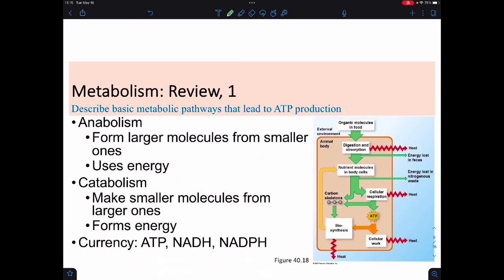Just to refresh our brains, metabolism is all the chemistry you can perform. Anabolism is when we make larger molecules from smaller ones, and this is an energy-consuming process. Catabolism is when we make smaller molecules from larger ones, and this typically is an energy-forming process, although that doesn't necessarily need to be the case. The currency that we use in this entire process includes ATP, NADH, and NADPH.